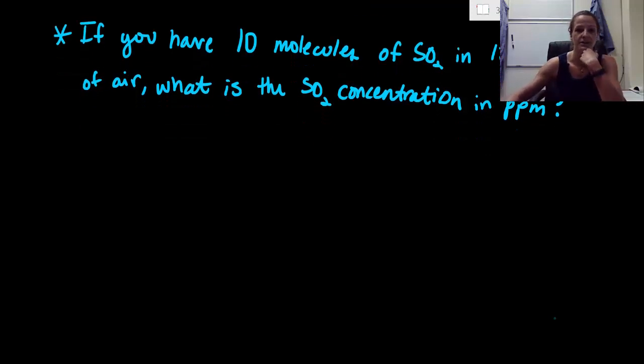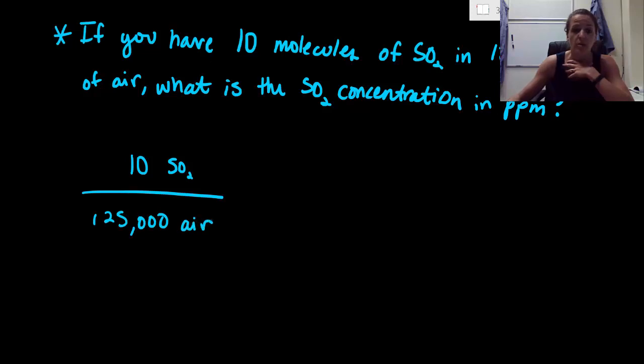All right, let's see how you did. So personally, how I would solve this is I would automatically come up with a fraction here. So 10 molecules per every 125,000. So 10 molecules of SO2 per every 125,000 molecules of air. But we want this to be in ppm, so parts per million. So right away, I'm going to set up another fraction.